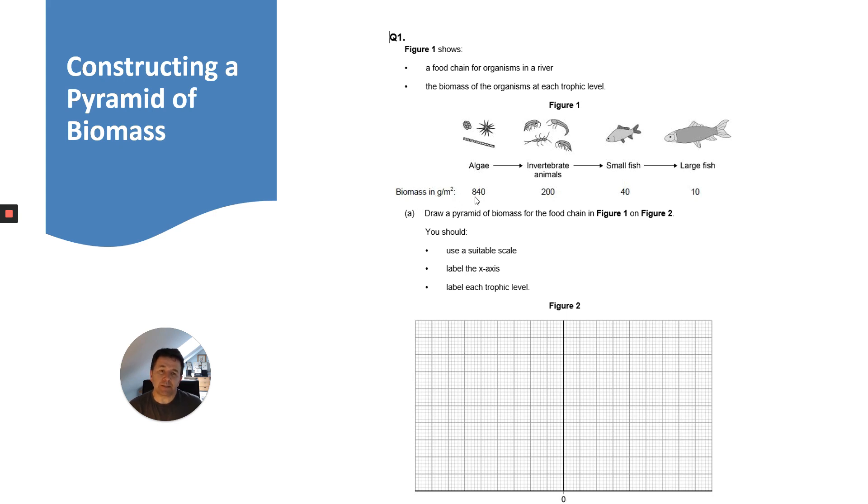They show you the biomass in grams per meter squared. You can see that the levels reduce, so that's why it's a pyramid shaped, because biomass is reduced at each trophic level.